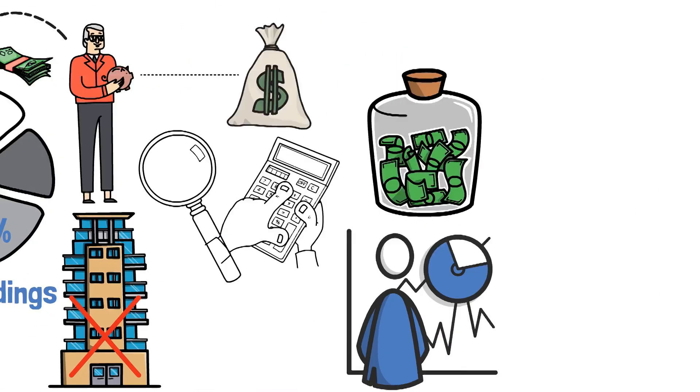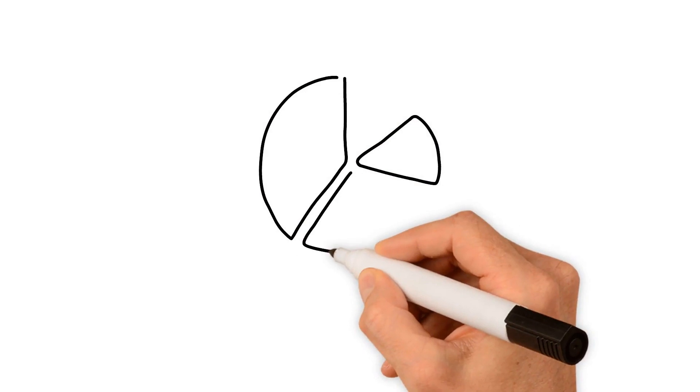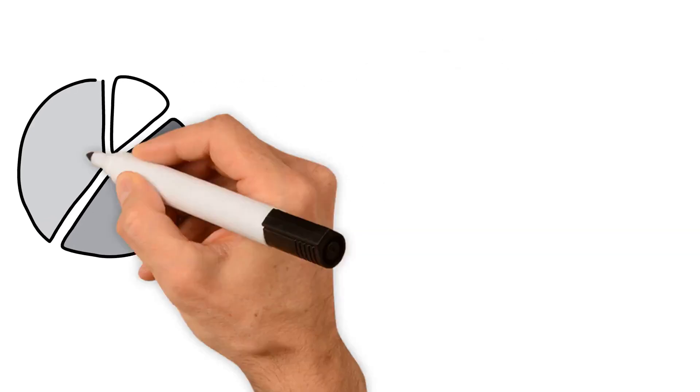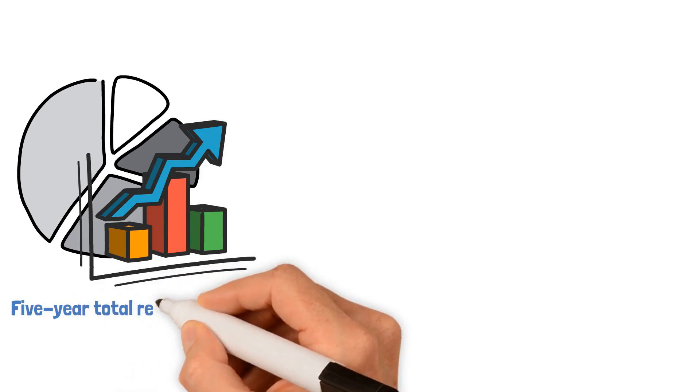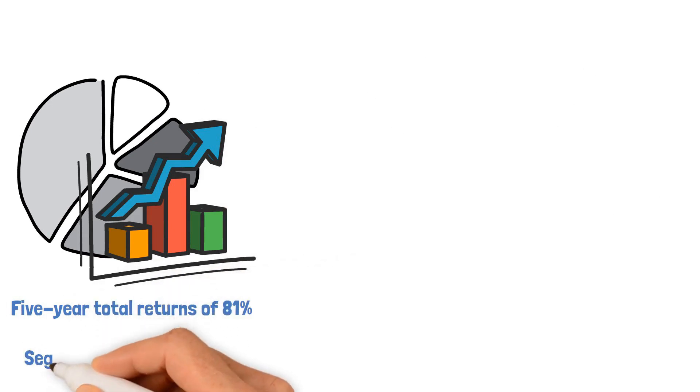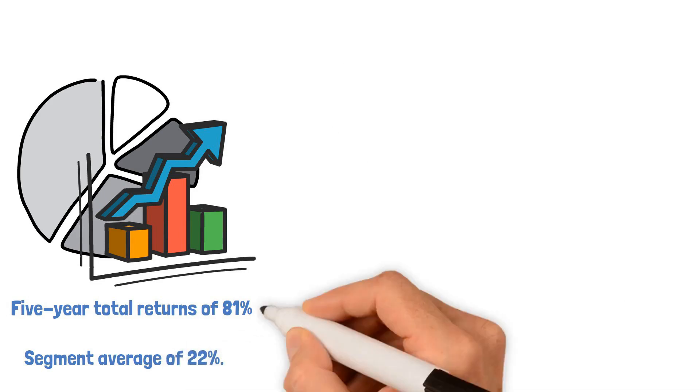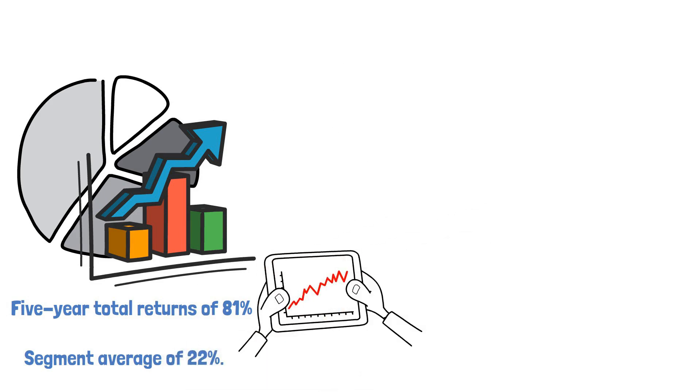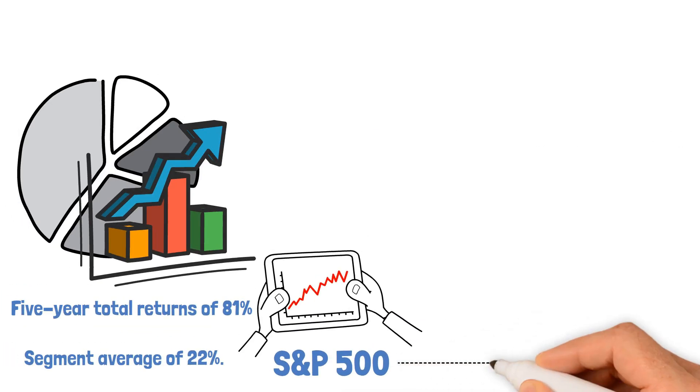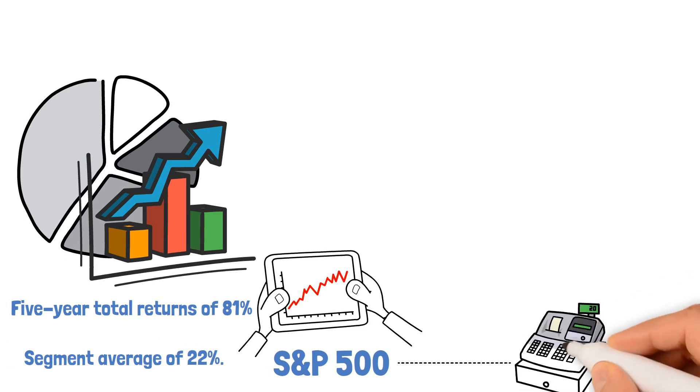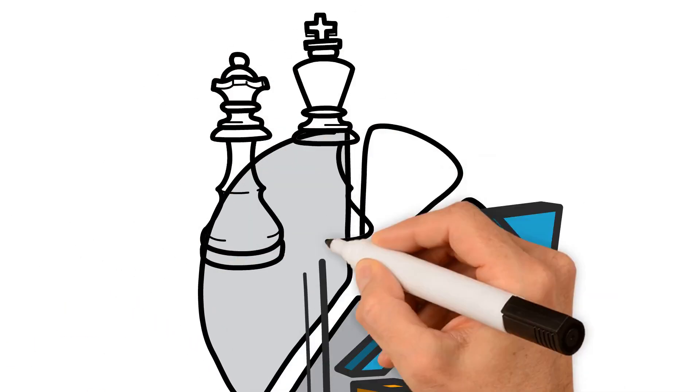The efficacy of DLN's dividend-centric approach is vividly demonstrated by its outstanding five-year total returns of 81%, significantly surpassing the segment average of 22%. This remarkable performance aligns closely with the performance of the S&P 500,